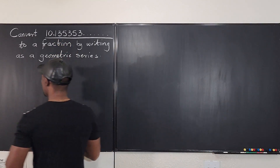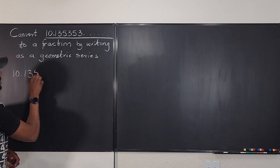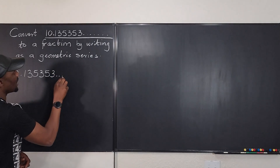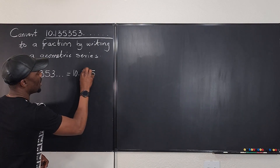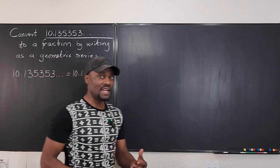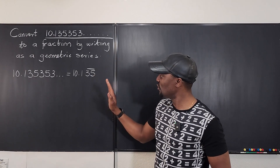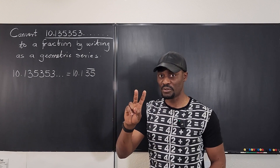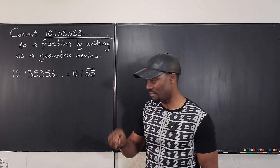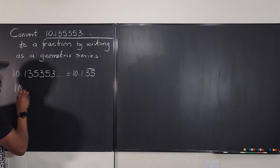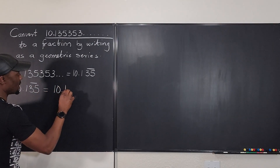So we can rewrite this number. I'm going to write it as 10.1353535... which can be written as 10.1 with '35' bar — telling me that I have identified the part of the decimal that's repeating. Once this is done, the next step is to write this as a sum. That's step two: number one, identify what part is repeating; number two, write it as a sum.